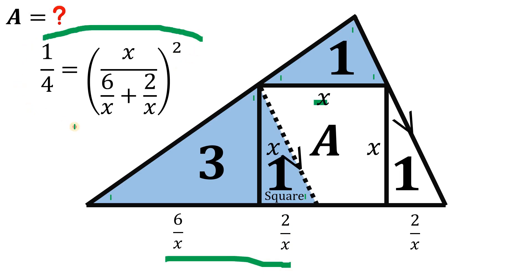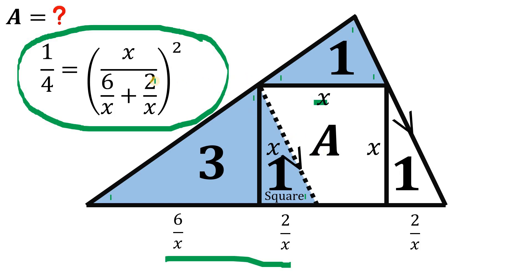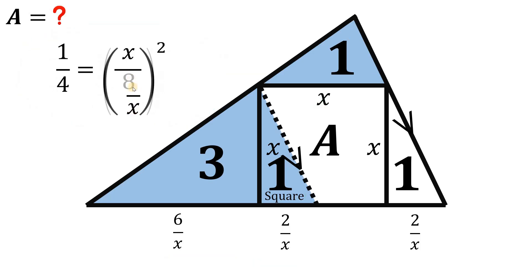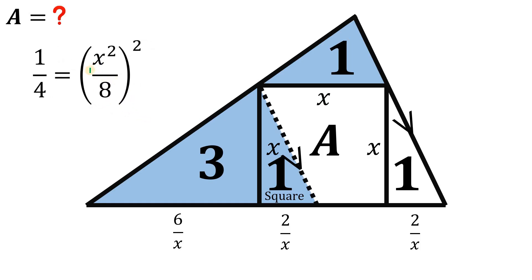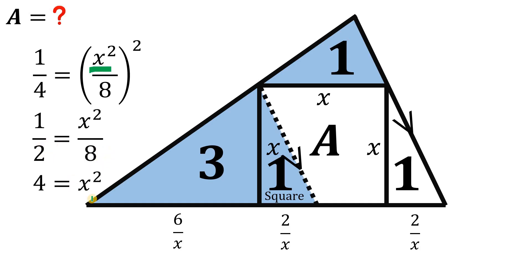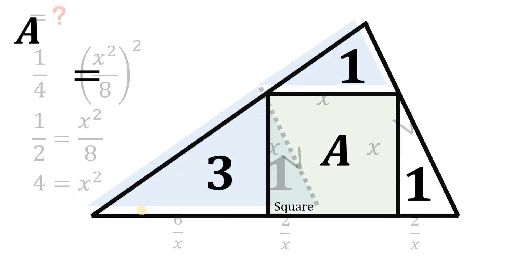Solving for x in this equation gives us the area of the square. Combining 6 over x and 2 over x — since they are like fractions — gives 8 over x. Taking the reciprocal of the denominator gives x squared over 8. Taking the square root of both sides gives 1 over 2 equals x squared over 8. Multiplying both sides by 8 gives x squared equals 4, which is the area of the square.